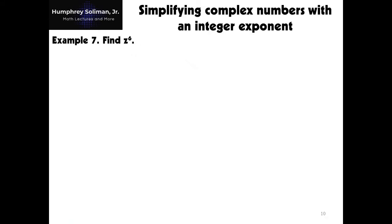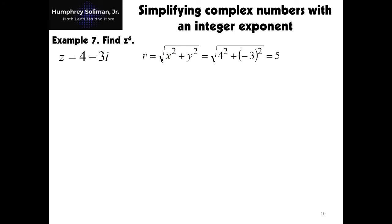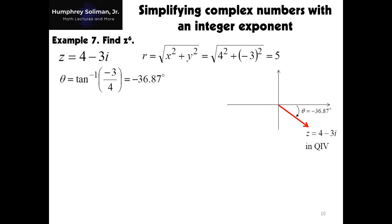Our last example for this video: simplifying complex numbers with an integer exponent. Example number 7, find z raised to 6, if z equals 4 minus 3i. Our first move is to convert the rectangular form to polar form. In finding the modulus, r equals the square root of 4 squared plus negative 3 squared, which gives us 5. For the argument, theta equals arc tangent of negative 3 over 4, which equals negative 36.87 degrees. Since our argument is negative, we look for its positive equivalent by examining the complex plane — z is in quadrant 4. Subtracting 36.87 degrees from 360 degrees gives 323.13 degrees.